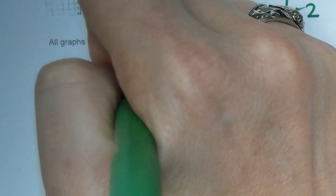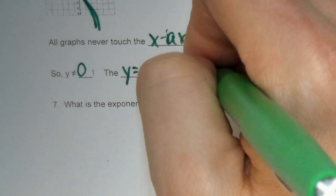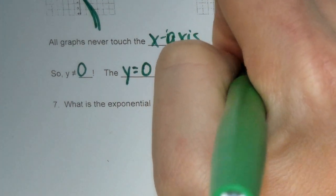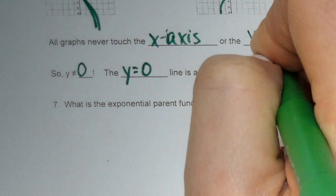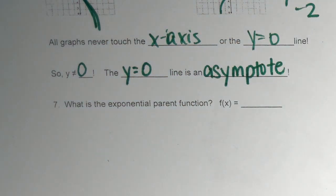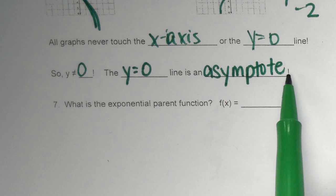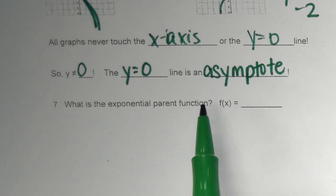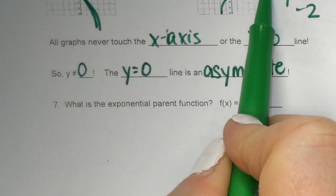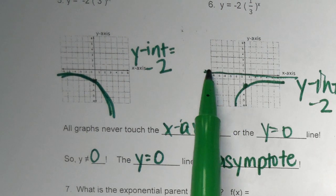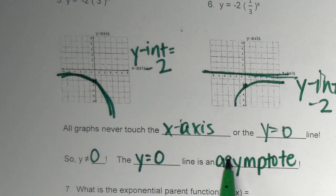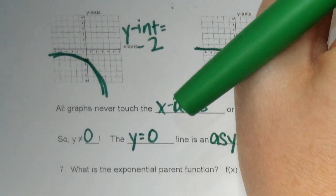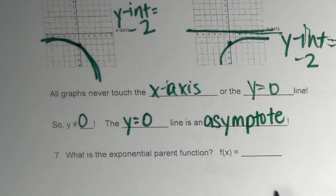And, we call the y equals 0 line. I'm going to give you a new word. Asymptote. Yes. It is a weird word. It kind of feels like you're saying something wrong. But, it's a math word. Asymptote. Asymptote. If you want to say it. Asymptote. So, this line right here. This line. Y equals 0. Your x-axis is called. It is an asymptote. Now, the asymptotes can change as we get further along in this.